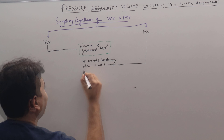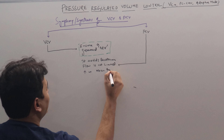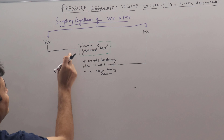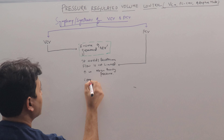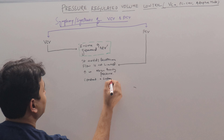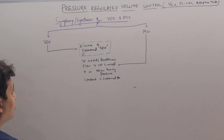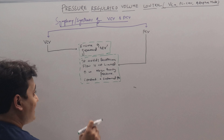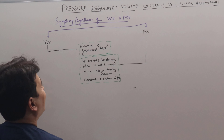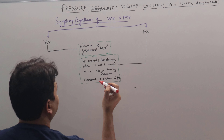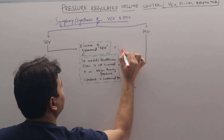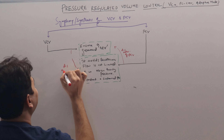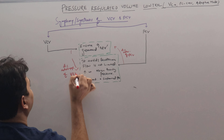Third, PCV increases mean airway pressure, and it provides constant and sustained pressure. So these are the advantages of PCV. What is the disadvantage of PCV? It does not guarantee a constant minute ventilation. So this is the disadvantage of PCV, and the flow limitation and barotrauma risk are the disadvantages of VCV.